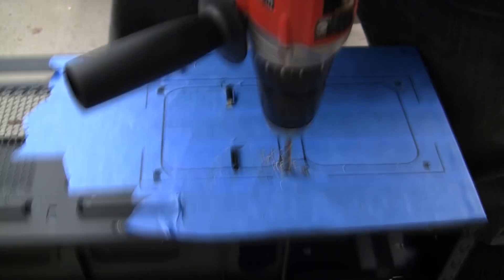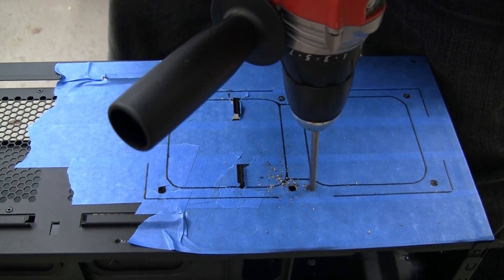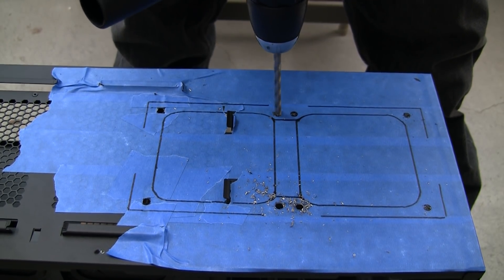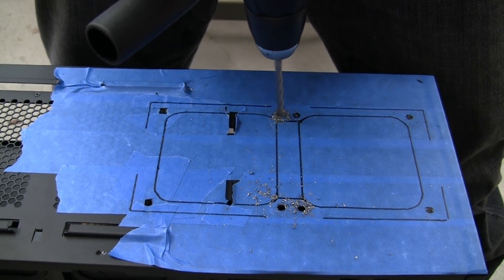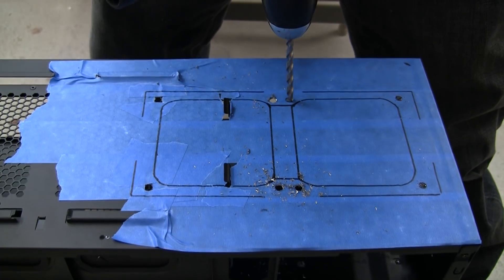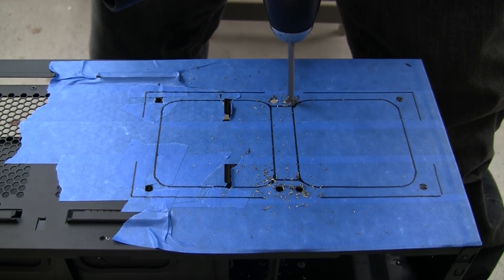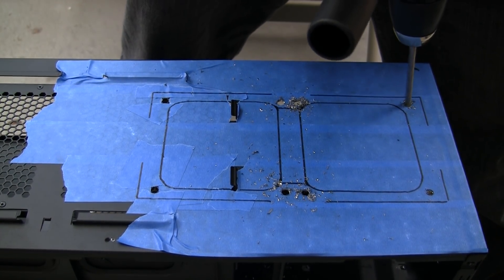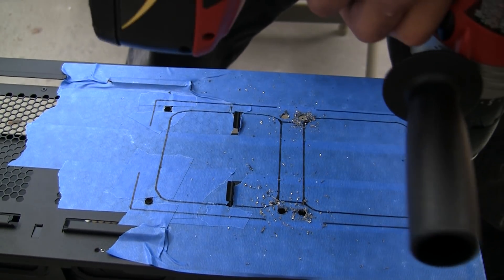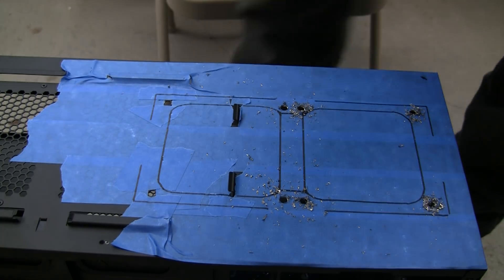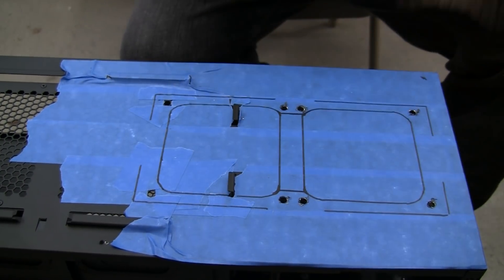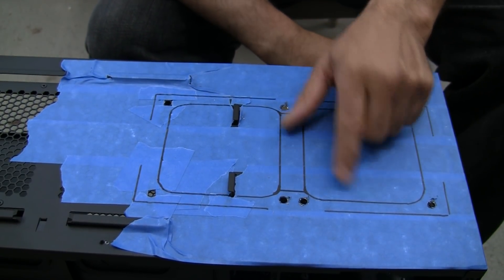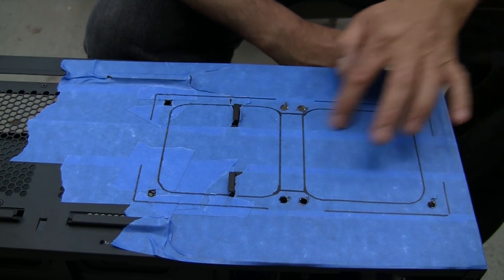Now that we have all the holes drilled out with the pilot bit, let's just go ahead and we'll go right to the quarter inch bit and finish drilling these out. Again, you want to start off slow and then put even pressure on it.